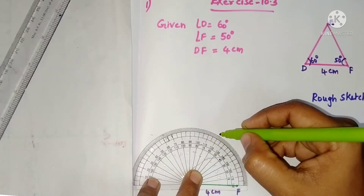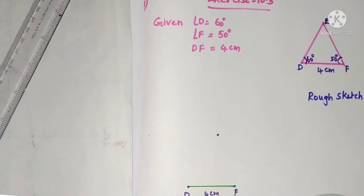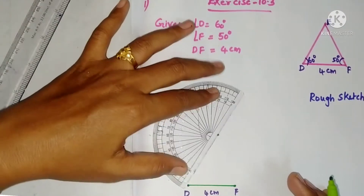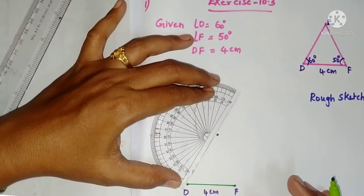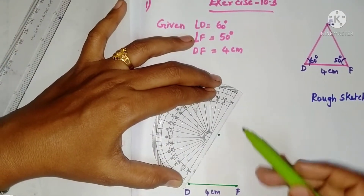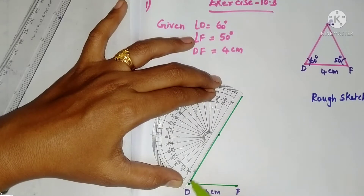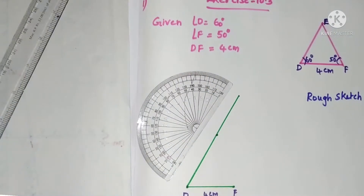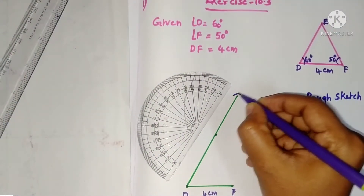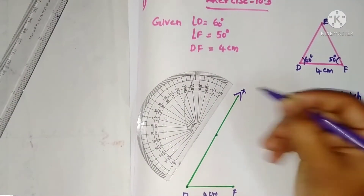The down scale reading is 60. Label it, then just draw a ray. Let it be ray DX.